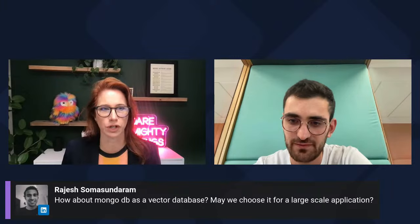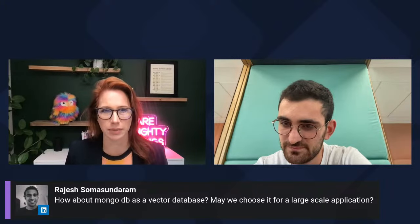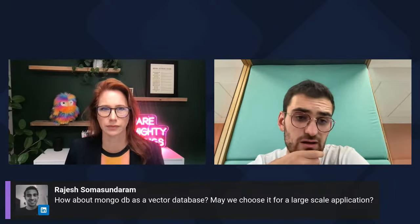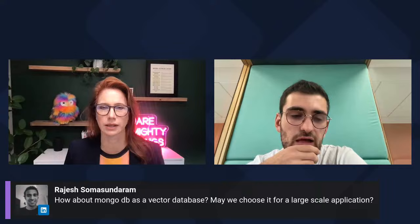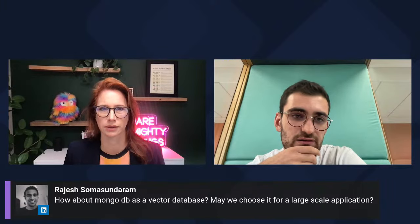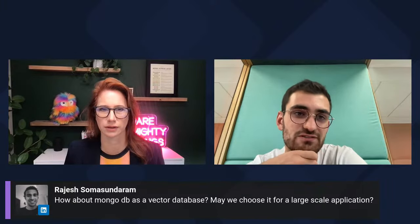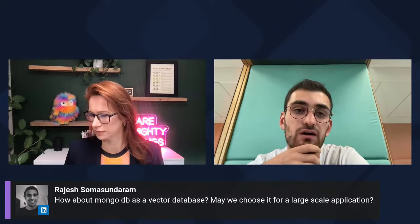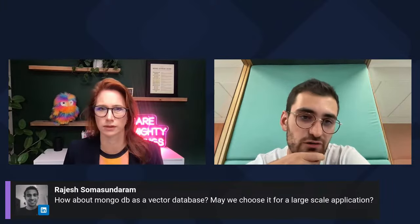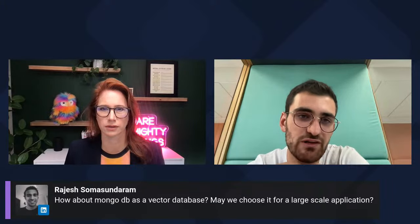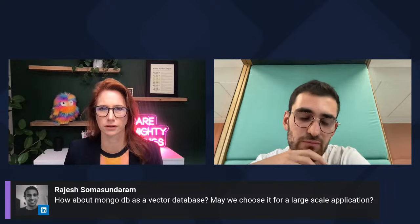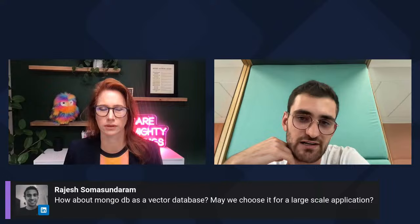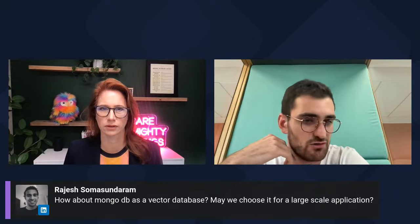The first question is from Rajesh: 'How about MongoDB as a vector database? May we choose it for a large scale application?' Since it's not dedicated for that, my guess is it will probably not be as efficient as the others. If you're dealing with millions of vectors, it would probably be a better choice to use a dedicated vector database. But if you're only dealing with a few thousands and you already have a MongoDB in your stack, go for MongoDB.